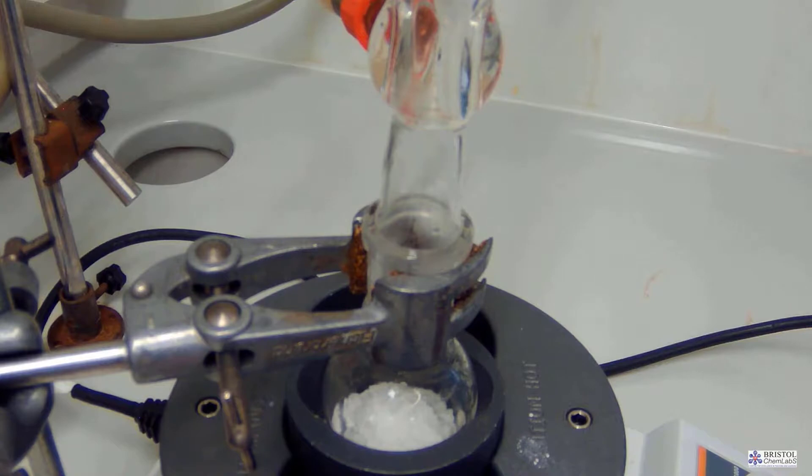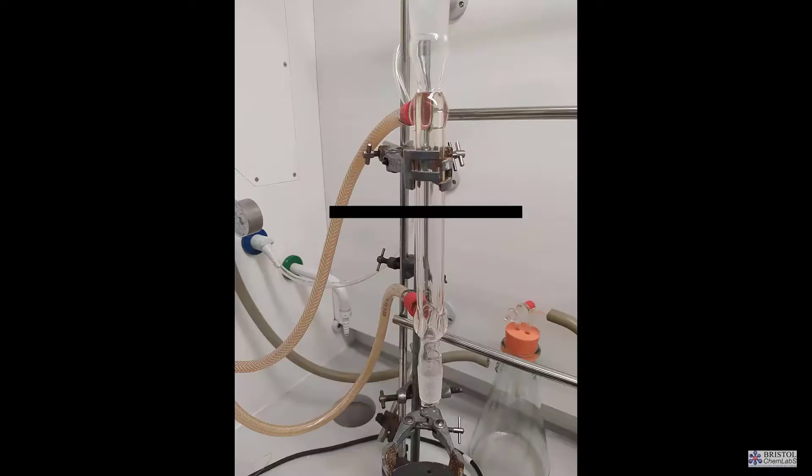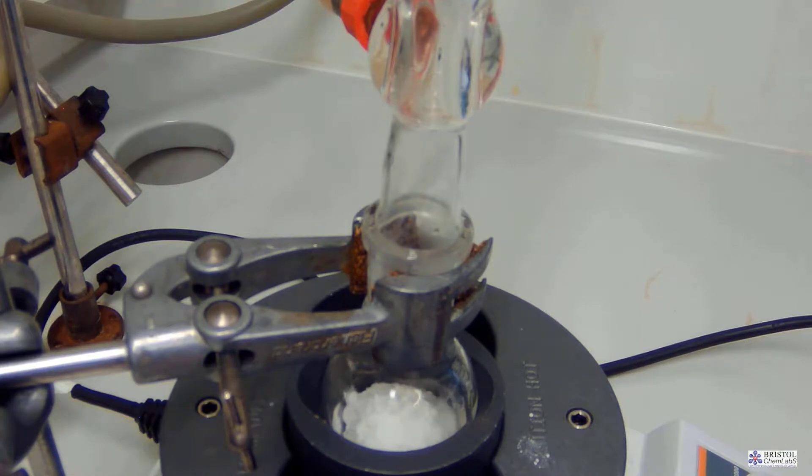The position where the condensation takes place in the condenser should not be any higher than two-thirds the way up the column otherwise you're likely to lose vapor out of the column. You can get condensers which are longer than the ones that we have employed here if high temperature reflux is required.